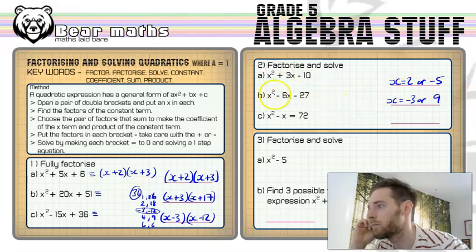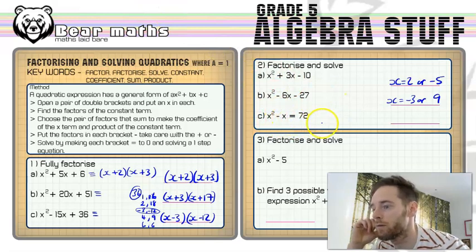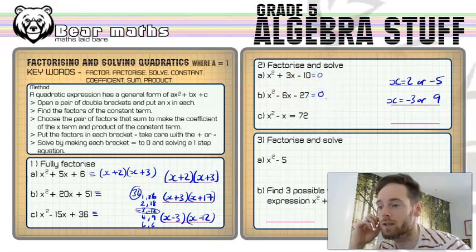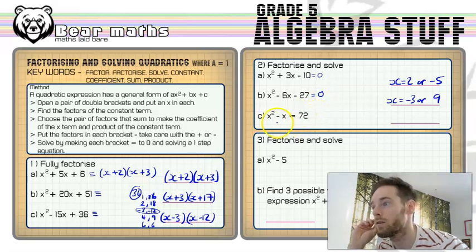Now in this last one, I've got x squared minus x equals 72. And it doesn't look like it's a general form of a quadratic at the moment. But we can make it so. I'm going to take the 72 away from here. I should mention, if you're solving it, you should really have each equation equal to 0. Because that's the only way you can solve a quadratic. So we're going to write it as x squared minus x minus 72 equals 0.